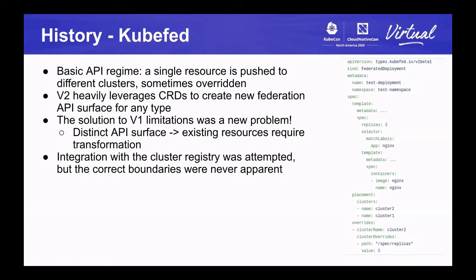Many of you are probably familiar with KubeFed or Kubernetes Federation. There have been a couple of different versions of that. The first was built before we had custom resource definitions and was really about spreading a single resource — one of the built-in types — pushed to different clusters from a central cluster that hosted federation, sometimes with overrides. The v2 federation took a similar approach where template resources are spread to multiple clusters with overrides.